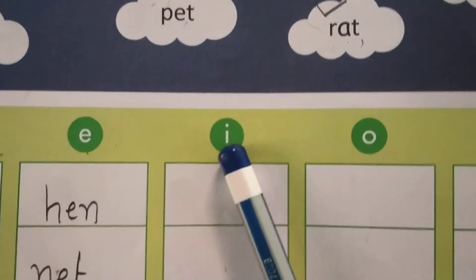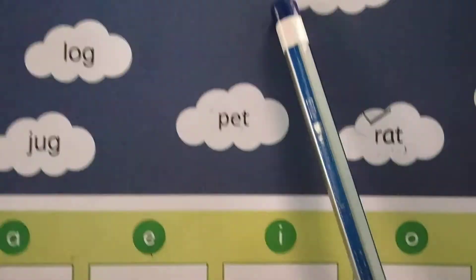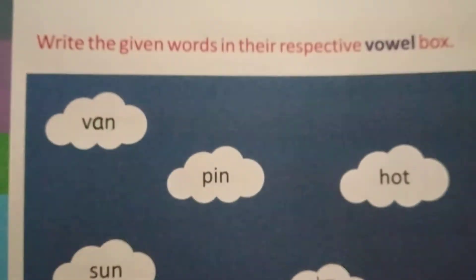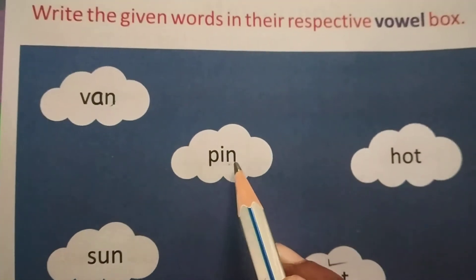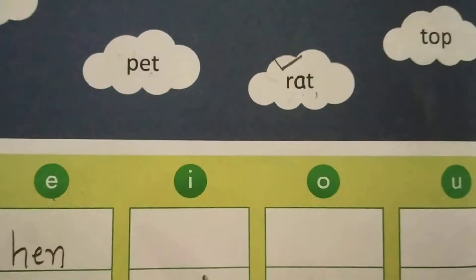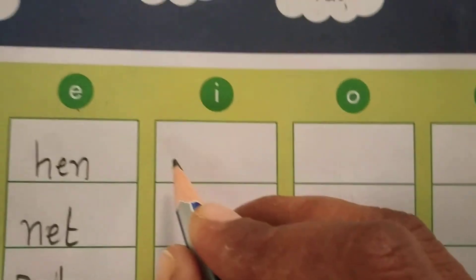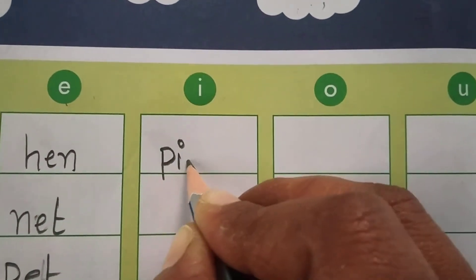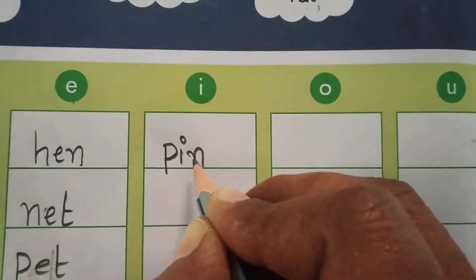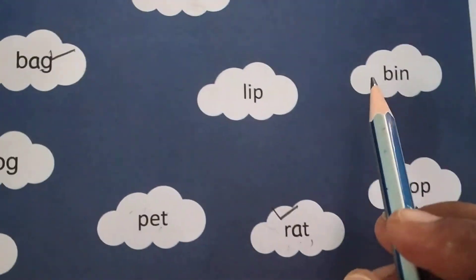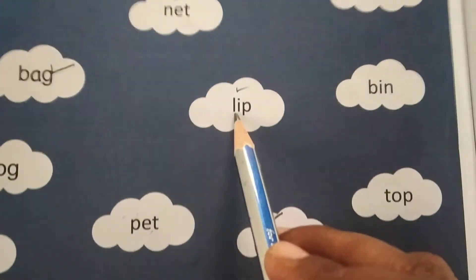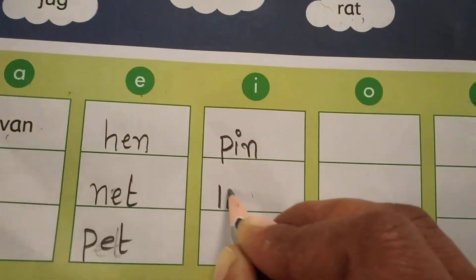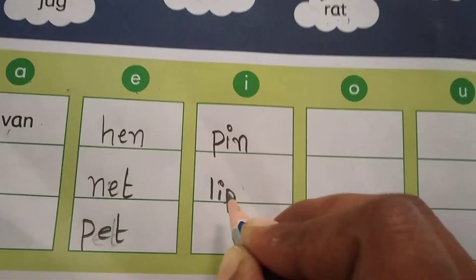Now see here — I. So I should be there in that word. Find here — here it is. P, I, N — pin. So you should write in the vowel I column. P, I, N — pin. Find one more word. See, here: L, I, P — lip. Write L, I, P — lip.